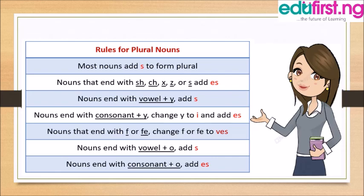You can also form the plural by adding -s to nouns that end with a vowel letter plus the letter o. For example, radio becomes radios, video becomes videos.